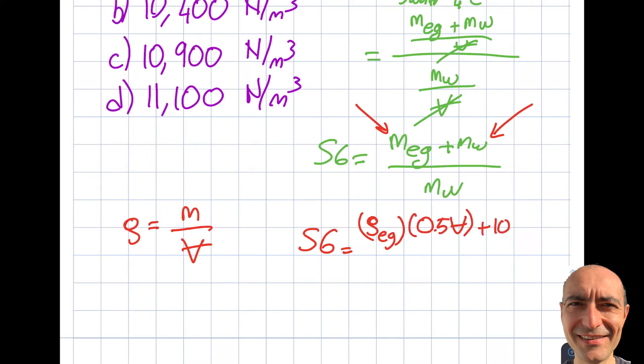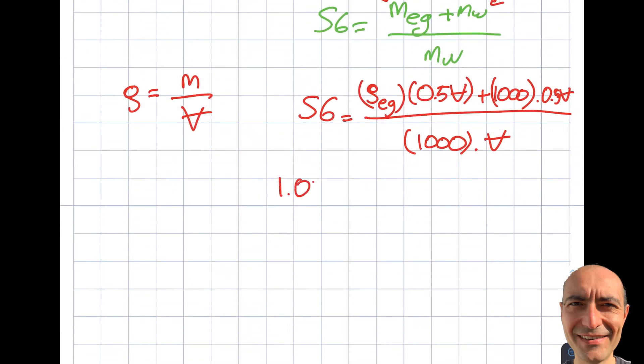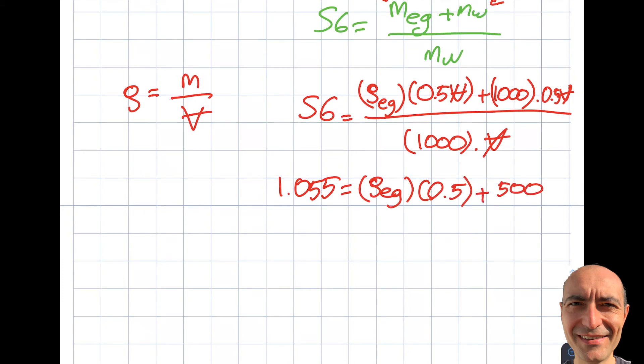Let's see what I'm going to get. So this is going to be 1.055 equals density of ethylene glycol. You can see the volumes cancel and I get myself times 0.5 plus 1000 times 0.5 is 500 divided by 1000.